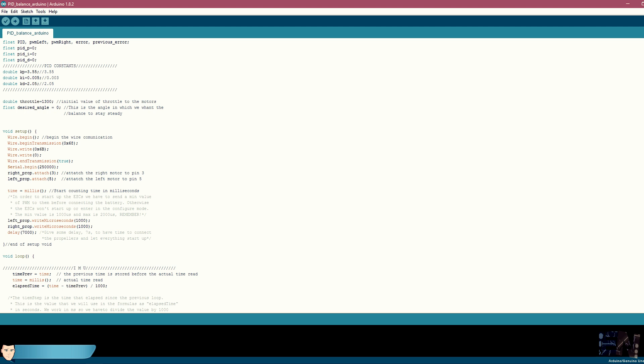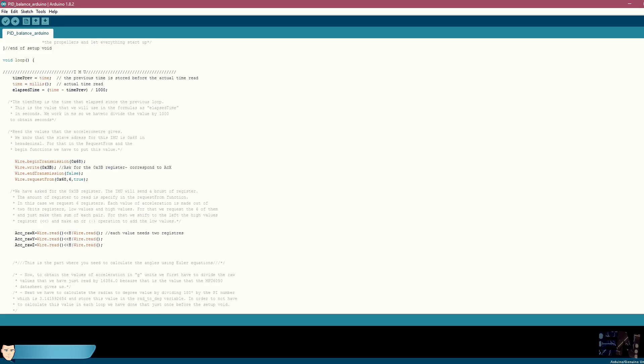Now in the setup loop we write the minimum values to the motors and add a delay of 7 seconds to give us time to connect the power supply to the motors. In the void loop, as we talked before, we measure the real elapsed time using the millis function.